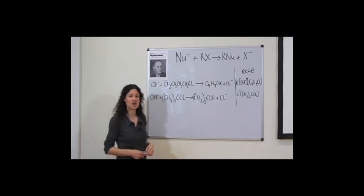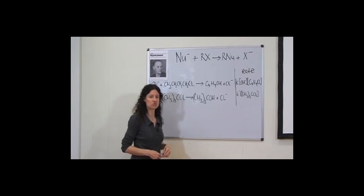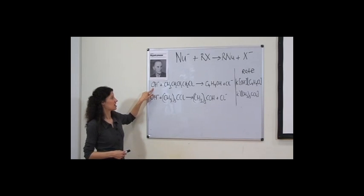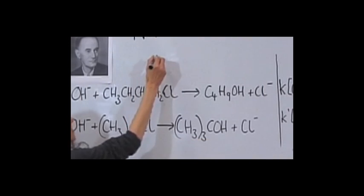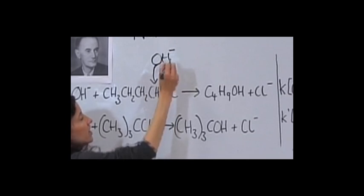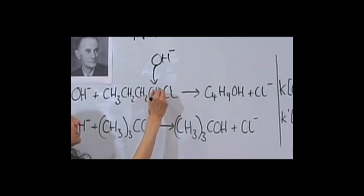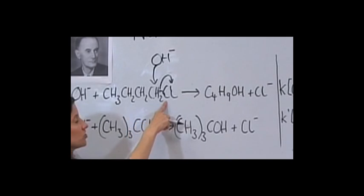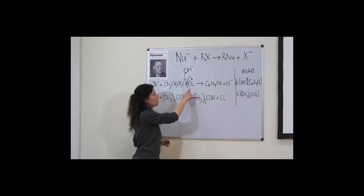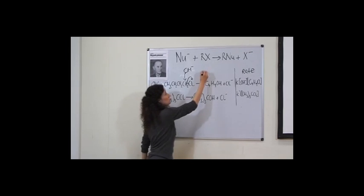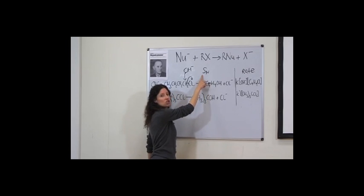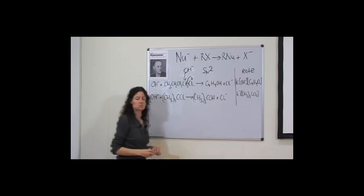What this implies about how the reaction takes place is that it involves a collision between hydroxide ions and n-butyl chloride — a direct attack of the OH on this carbon and simultaneous leaving of the chloride taking its electrons with it. Since this reaction involves the direct collision between these two species, we say it's a bimolecular process, and so it's a nucleophilic substitution involving two species.